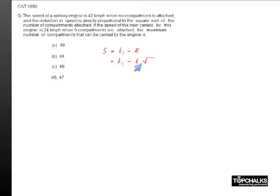the number of compartments attached to the train. So essentially the speed of the train now becomes an equation where there are two constants, k1 and k2, that we need to find out.